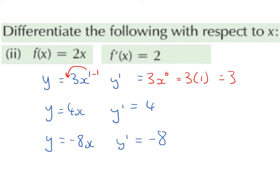In this example we have f of x is equal to 2x, so the derivative of that is going to be 2. Whenever we have any number with just an x stuck on, we literally just have to cross off the x.